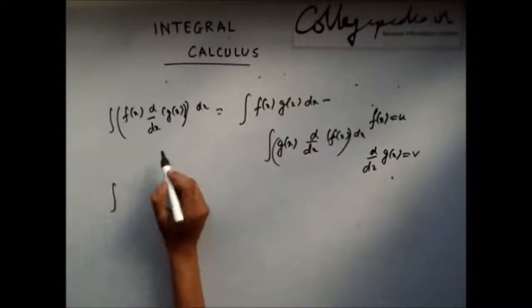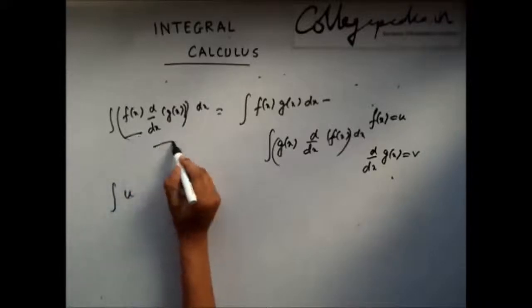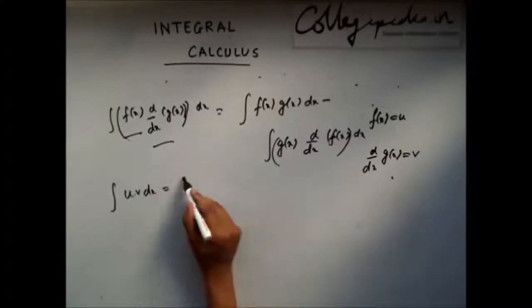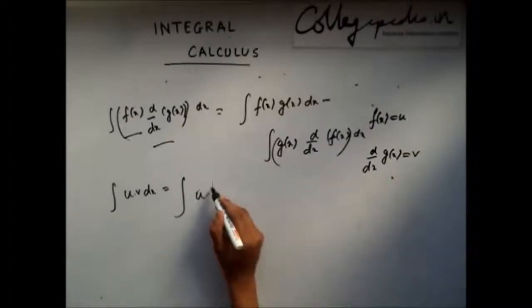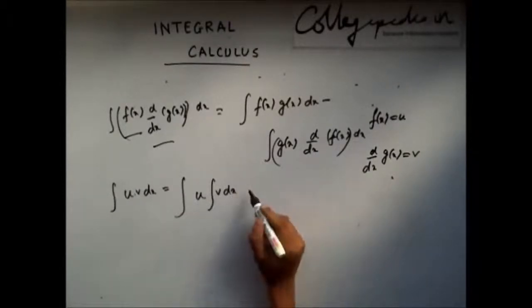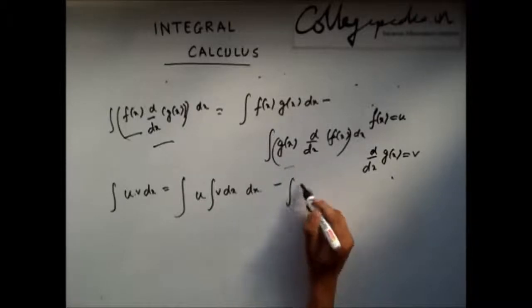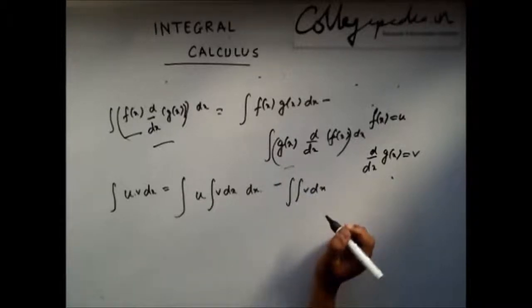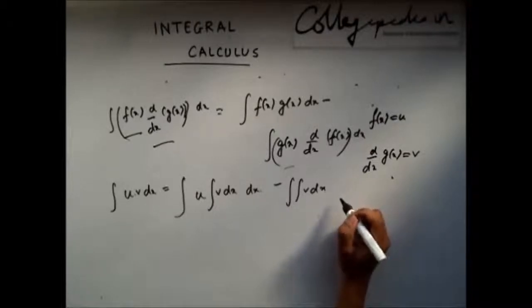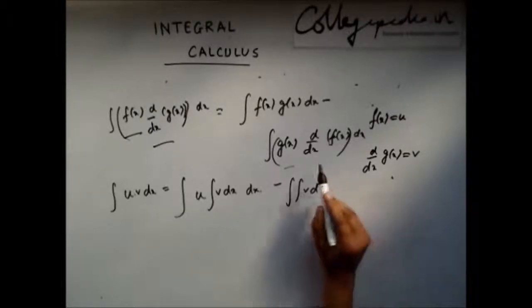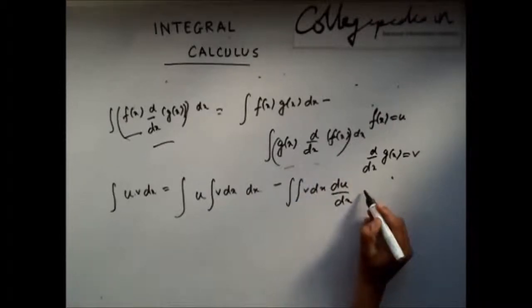So this becomes ∫uv dx, and this becomes f(x) is u and g(x) is integration of v dx. And this g(x) can be written as integration of v dx into du/dx dx.